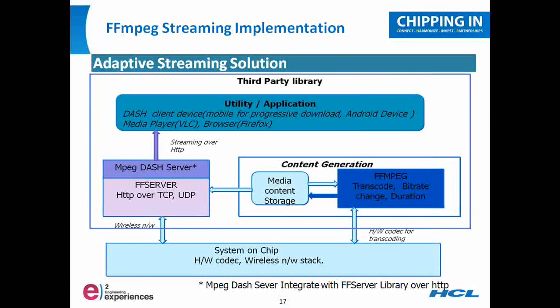This is basically an example of an adaptive streaming solution architecture, which will give a good idea of how adaptive streaming can be implemented. Adaptive streaming is a concept, and there are many techniques by which it can be achieved. Apple has its own adaptive streaming solution, Microsoft also has its own, and the solution mentioned here is MPEG-DASH, which is an open source solution used to illustrate an overall picture of how an adaptive streaming solution looks.